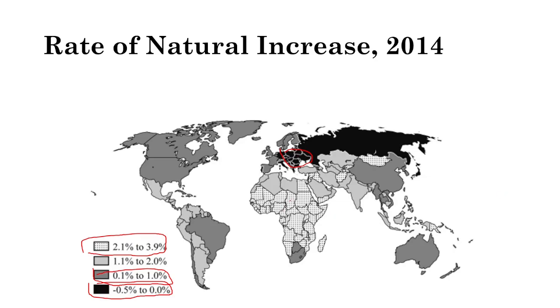In population pyramids for high natural increase rate countries, birth rates are higher and they really look like pyramids — exponential population growth with lower life expectancy.